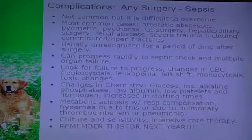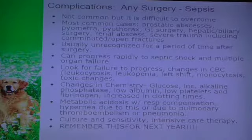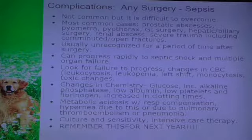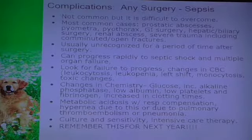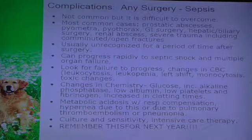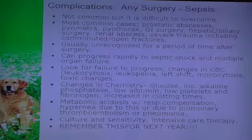Chemistry changes include alterations in glucose, increasing alkaline phosphatase, low albumin, low platelets, fibrinogen, increased clotting time, and elevated lactate. You'll see metabolic acidosis with respiratory compensation, tachypnea, or pulmonary thromboembolism or pneumonia if that's the source. Culture and sensitivity plus intensive therapy is what's needed to save these patients - but once they become septic, it's very hard to pull them out of it.